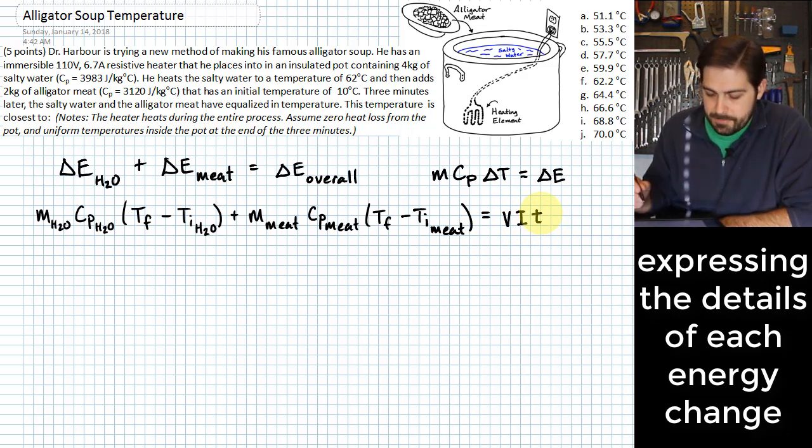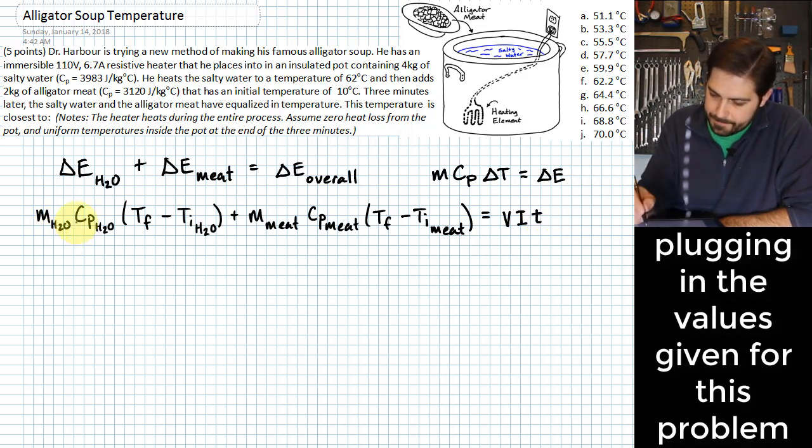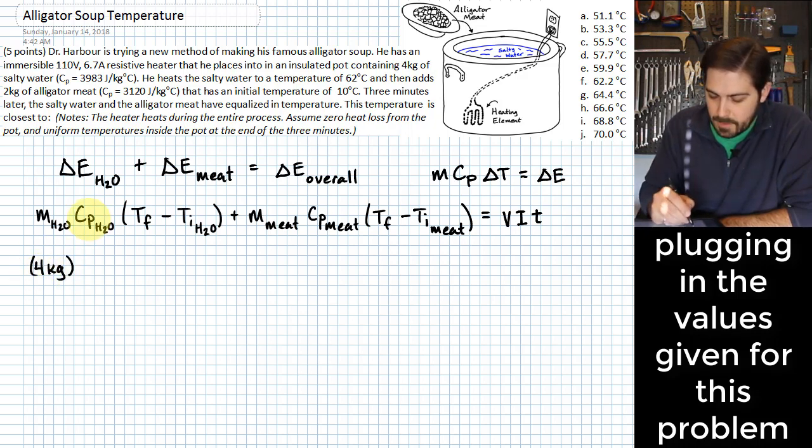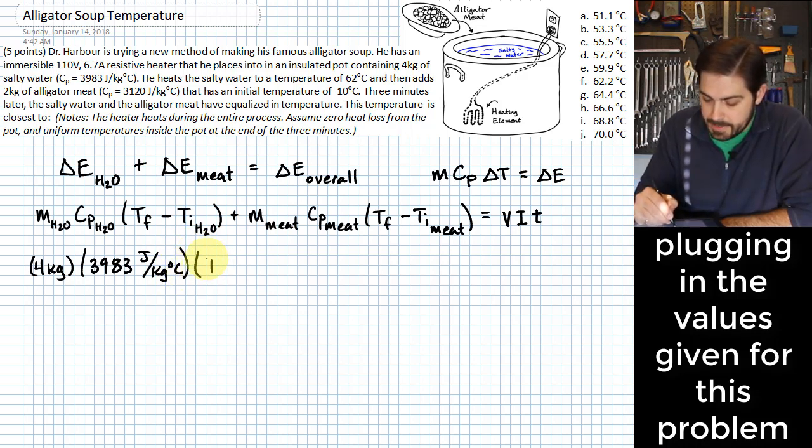Okay, so now we're ready to put in some variables. The mass of the water, it is given up here that that's four kilograms of that water, salty water. The specific heat value for that salty water is different than fresh water, and this problem acknowledges that. 3983 joules per kilogram degree C times, again T sub f is what we are trying to find, that's our final temperature overall, minus the initial temperature of the water which is 62 degrees C.